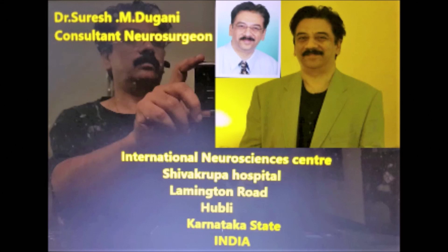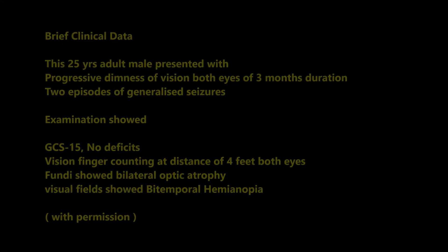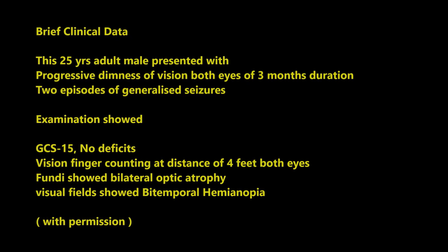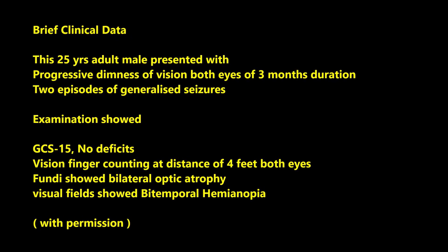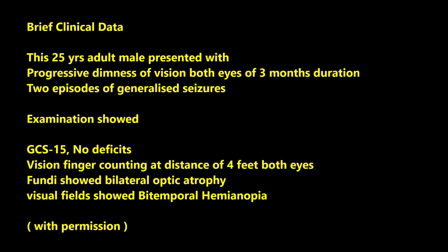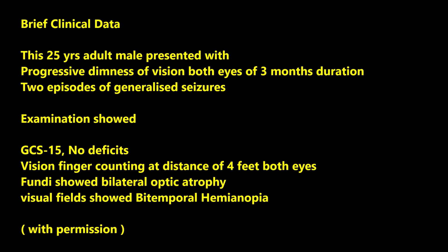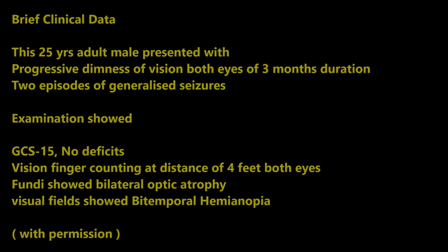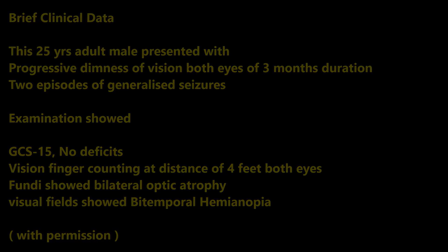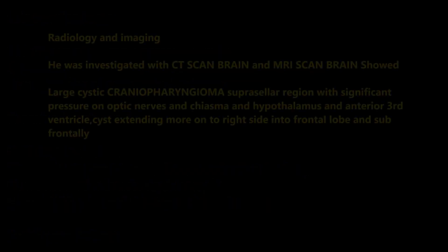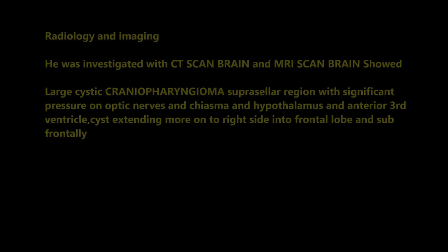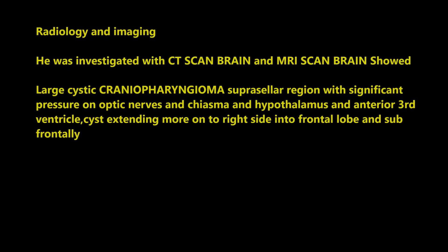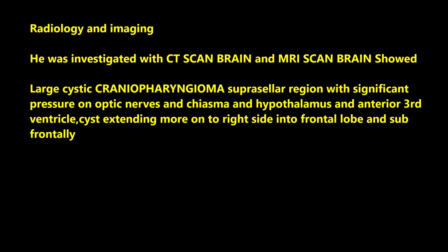This 25-year-old adult male presented with progressive diminution of vision in both eyes and two episodes of seizures. Examination showed his Glasgow Coma Score of 15, vision finger counting at the distance of four feet in both eyes, and fundoscopy showing bilateral primary optic atrophy and bitemporal hemianopia.